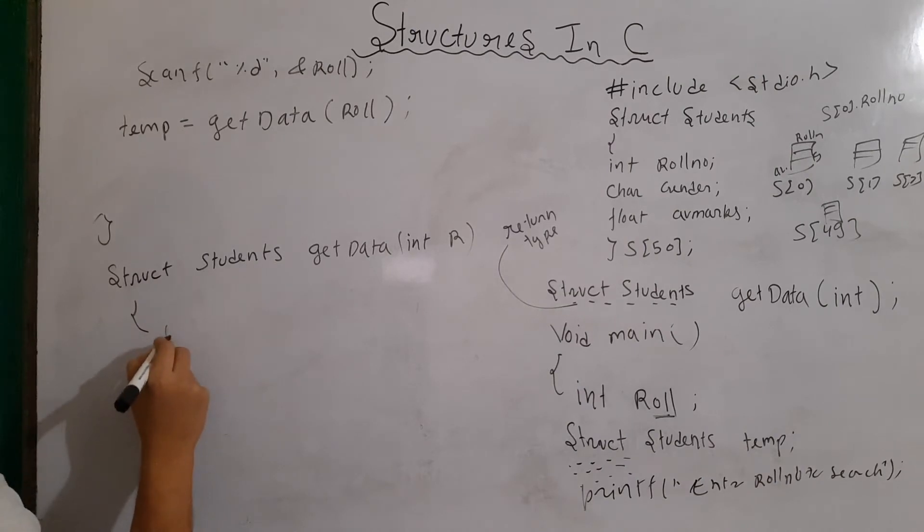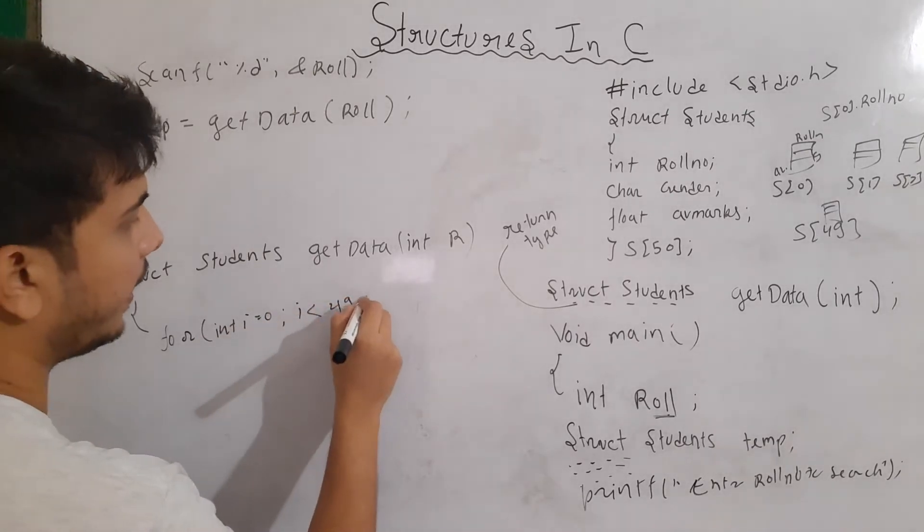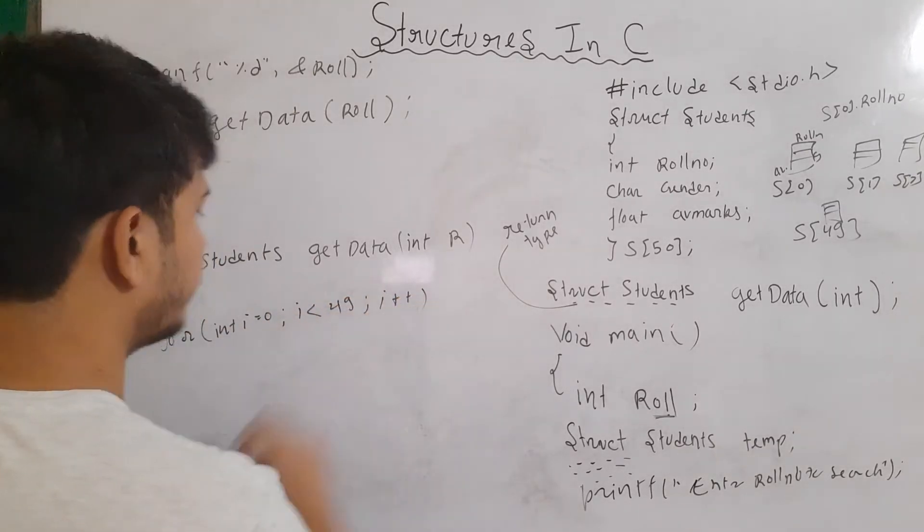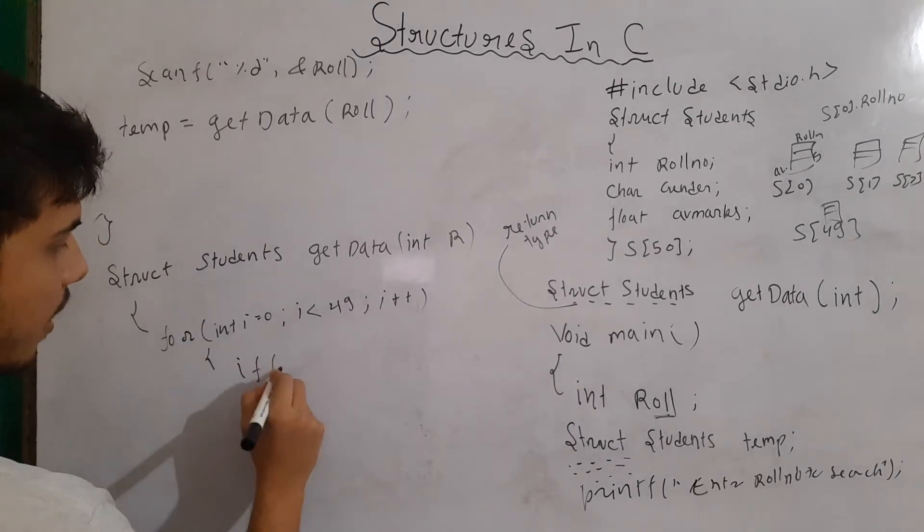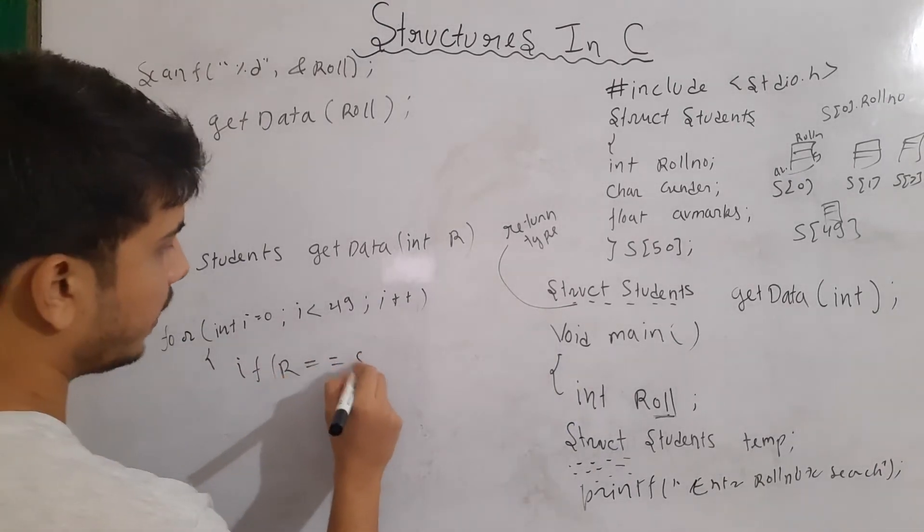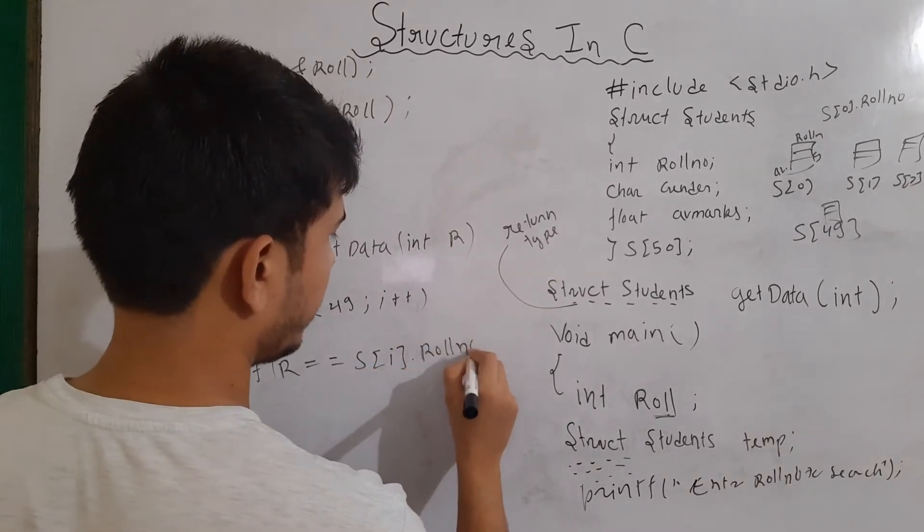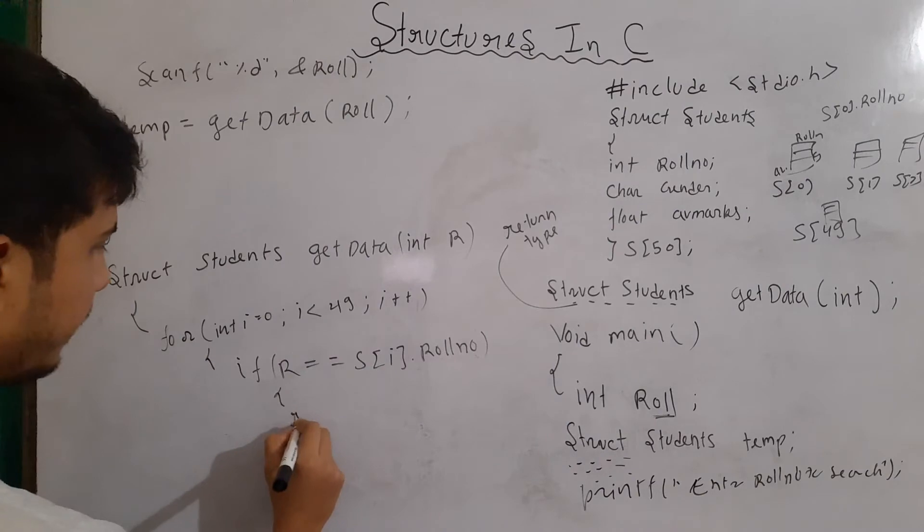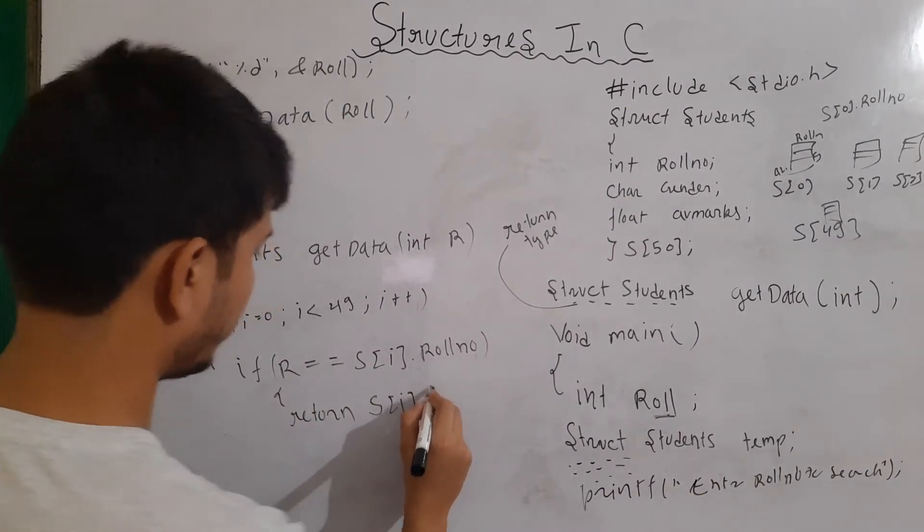So, I will use here a loop for int i equal to 0 i less than 49 and i plus plus. And I'll write here if r is equal equal s[i] dot role number, then return s[i].